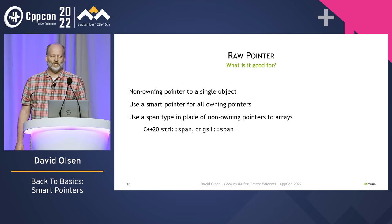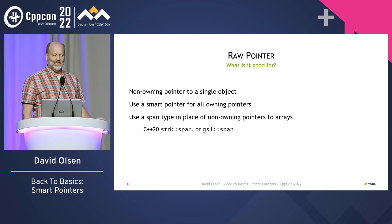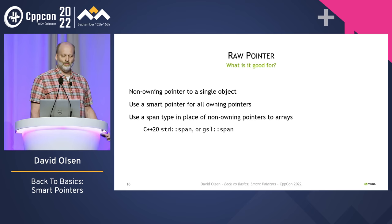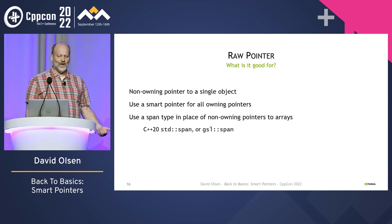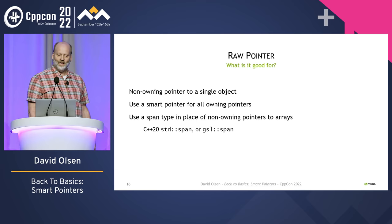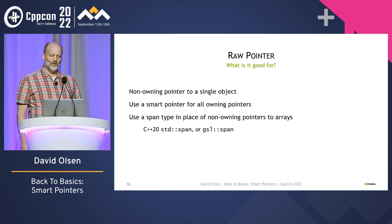If smart pointers are so great, are there any situations where you should use a raw pointer? Yes — when you have a non-owning pointer to a single object. If a pointer owns what it points to, use a smart pointer. If it's a non-owning pointer to an array, consider using a span type such as std::span or gsl::span, as Bjarne recommended in his keynote yesterday. If your code uses raw pointers only for non-owning references, your code will be easier to read and maintain and will have fewer pointer-related bugs.